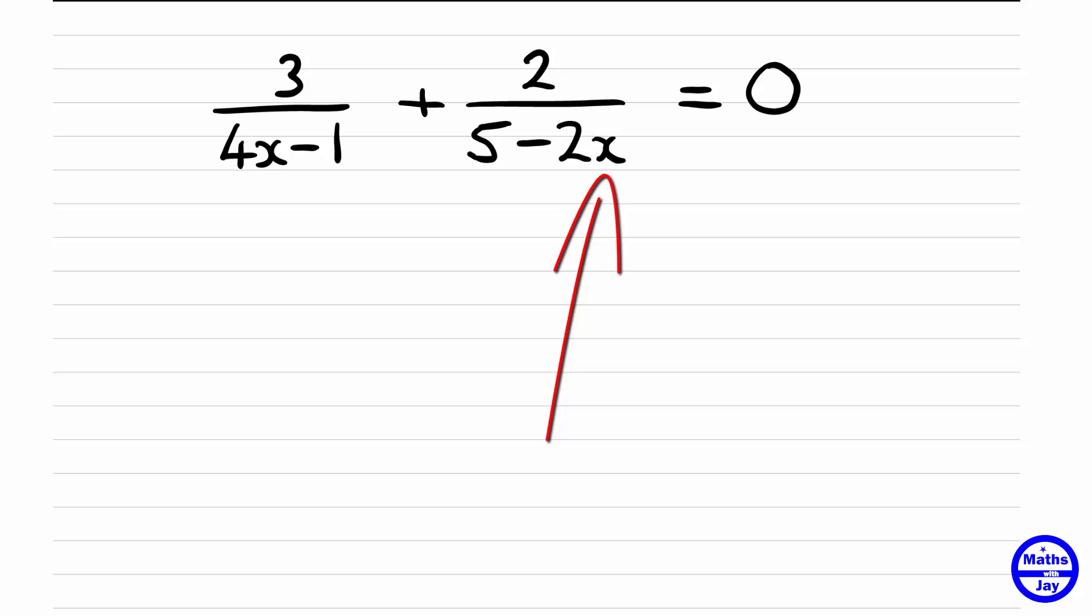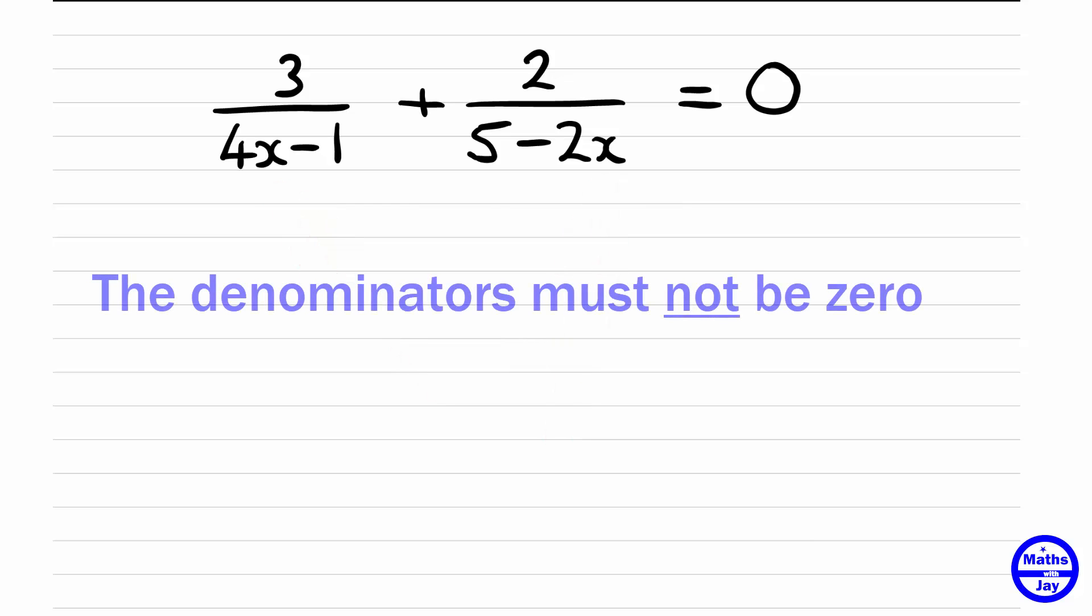Here the unknown appears in both denominators and we need to be careful not to let them equal zero. That means once we've solved the equation we just want to check that the value we've got doesn't make the denominators equal to zero. So let's write that down.